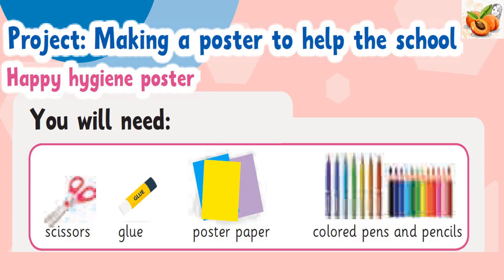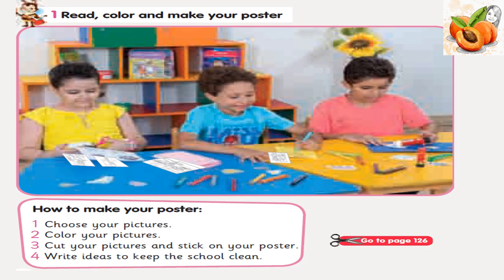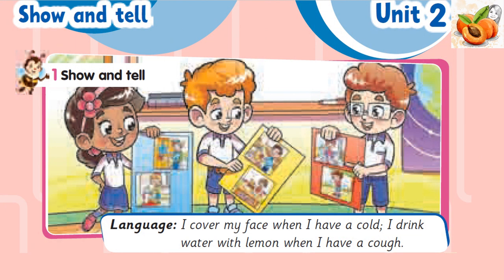Making a poster to help the school. Happy hygiene poster. You will need: scissors, glue, poster paper, colored pens and pencils. Read, color and make your poster. How to make your poster: 1. Choose your pictures. 2. Color your pictures. 3. Cut your pictures and stick on your poster. 4. Write ideas to keep the school clean. Now, show and tell. I cover my face when I have a cold.